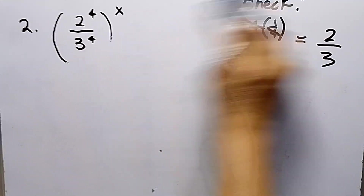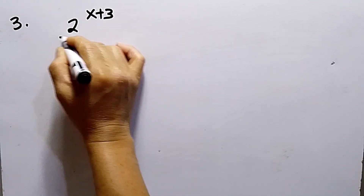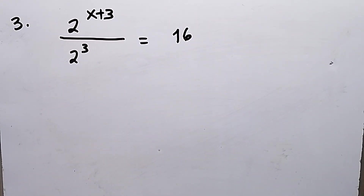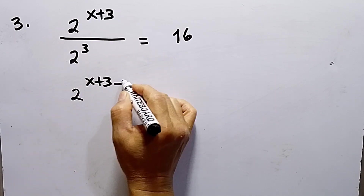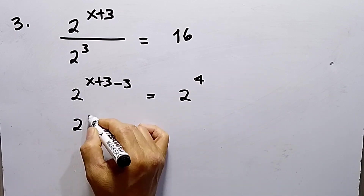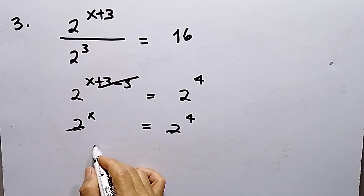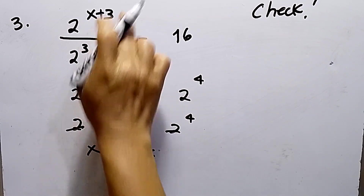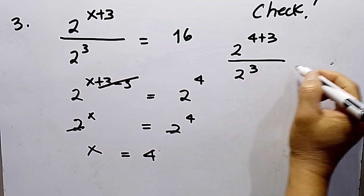Let's proceed to the third number: 2 raised to the power of (x plus 3) divided by 2 to the power of 3 equals 16. Applying the law of exponents, this becomes 2 raised to the power of (x plus 3) minus 3 equals 2 raised to the 4th power, since 16 equals 2^4. The x plus 3 minus 3 simplifies to x, which equals 2^4. Let us check by substituting x equals 4 into the given equation: 2 raised to the power of (4 plus 3) over 2 raised to the 3rd power equals 16.